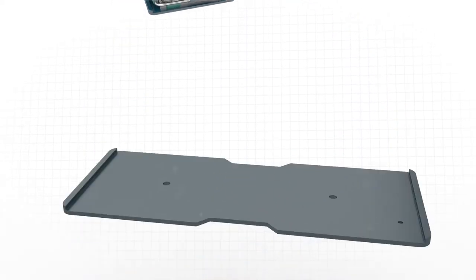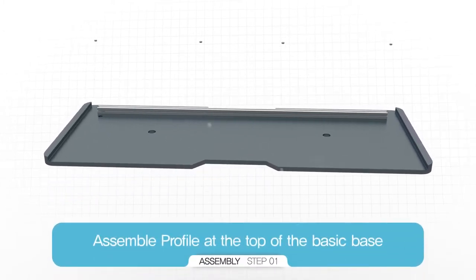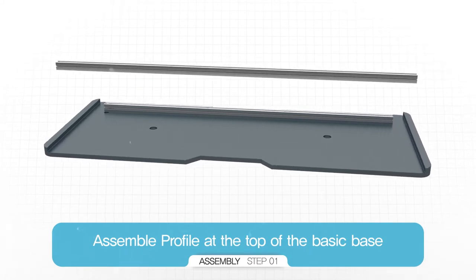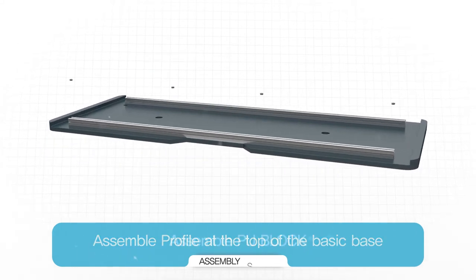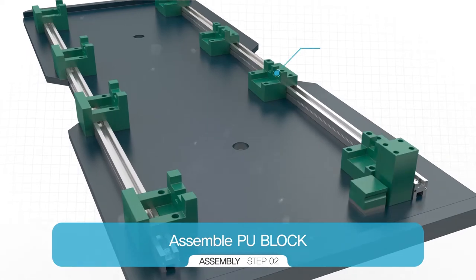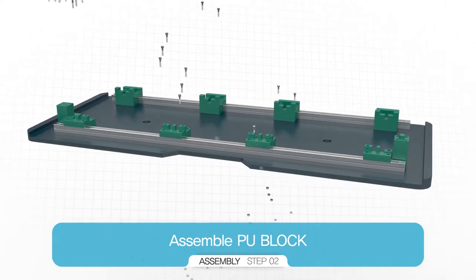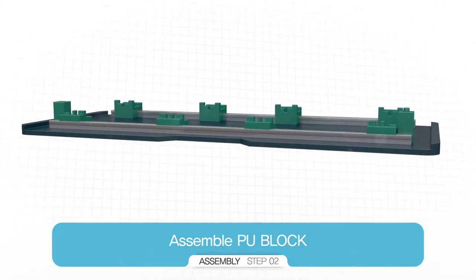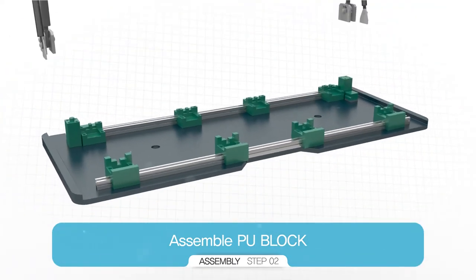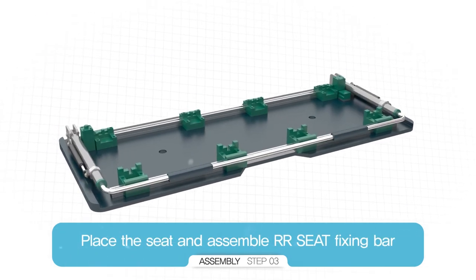The assembly sequence of the seat pallet is as follows. First, assemble the profile at the top of the base. Then, assemble the PU block. Next, place the seat and assemble the RR seat fixing bar.